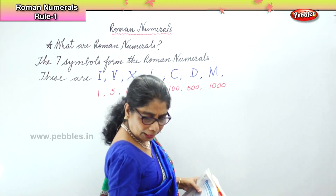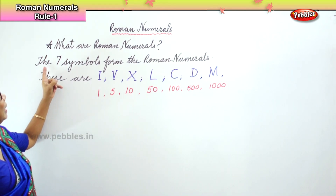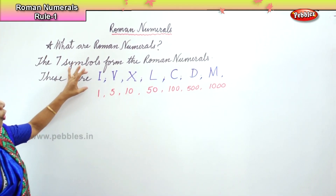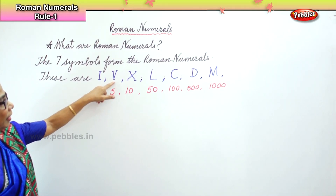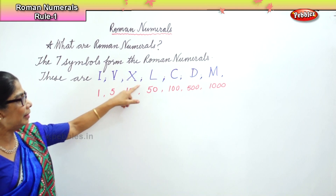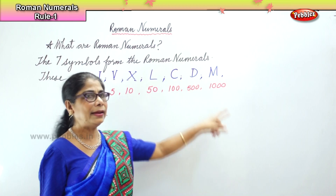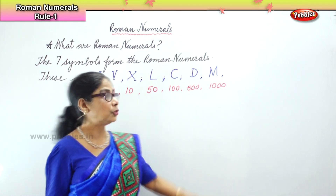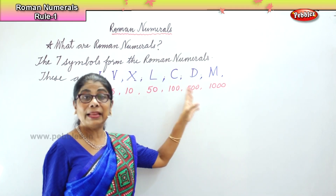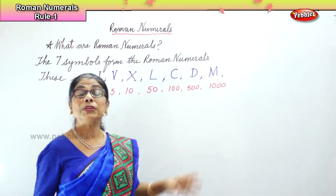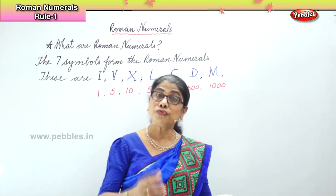So the Hindu-Arabic numerals are different from the Roman numerals. The seven symbols form the Roman numerals. These are: one, five, ten, fifty, hundred, five hundred, and one thousand. So we have here seven characters, seven symbols, that make up what is called the Roman numerals.